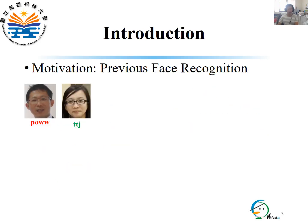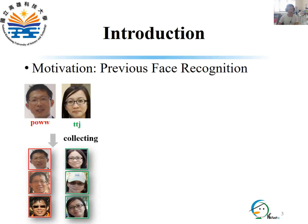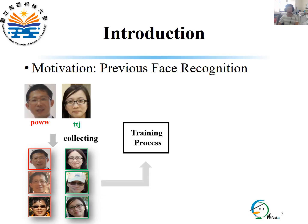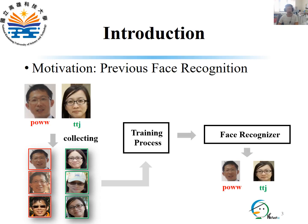Previous methods for face recognition first collect lots of faces of persons to be recognized. For example, to recognize me, Paul, and my wife TTJ, the first step is to collect our faces. By using the collected face dataset, a process called training is then applied to learn a recognizer that can successfully recognize Paul and TTJ.